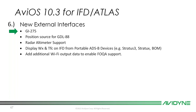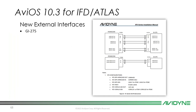Moving on to external interfaces — a big one. In 10.3, the GI-275 is now an approved interface with the IFDs. The installation manual is the approval document for that interface, so installers no longer have to do field approvals for the GI-275 — they just reference the installation manual, specifically Figure D70 in IAM Revision 24. It's just a couple of ARINC 429 connections and an RS-232. Some recommended configurations are all in the new interactive installation manual.